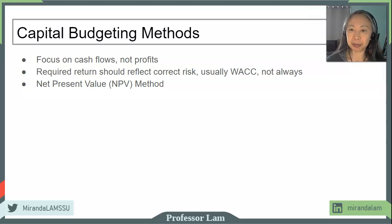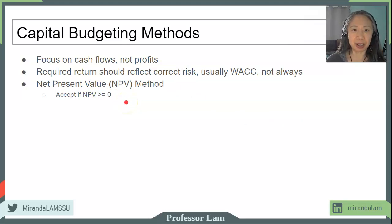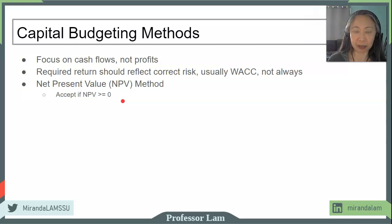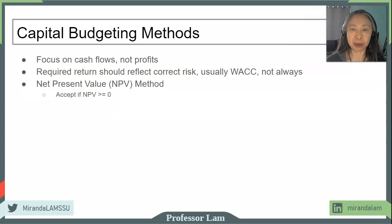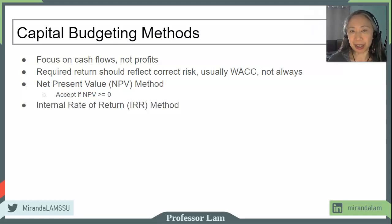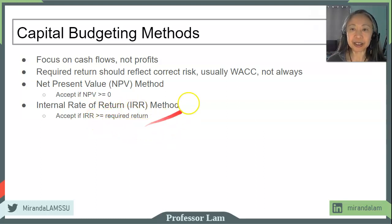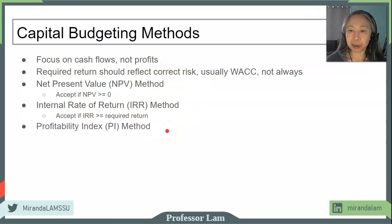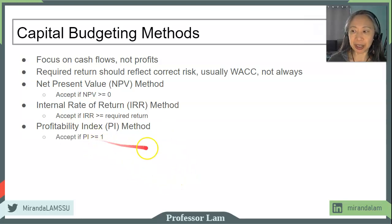A brief review of capital budgeting methods: for the net present value method, we will accept a project if the net present value is greater than or equal to zero. It's very important to emphasize that a net present value exactly equal to zero means the project is breaking even in an NPV sense — the investor and entrepreneur is earning her required return on her equity. A zero net present value does not mean the investor is earning no return; it means they earn exactly their required return, their cost of equity. For the internal rate of return method, we accept the project if the IRR is greater than or equal to the required return. For the profitability index method, the cutoff is a profitability index greater than or equal to one.